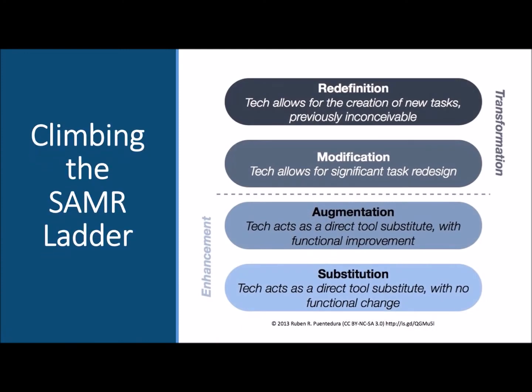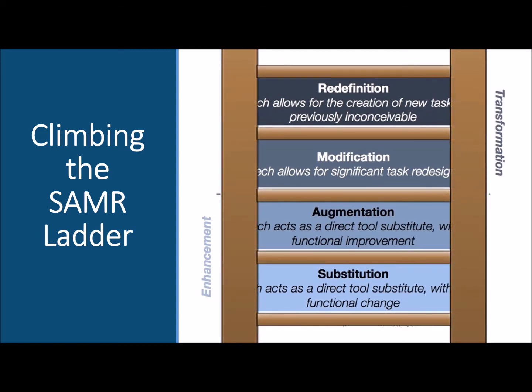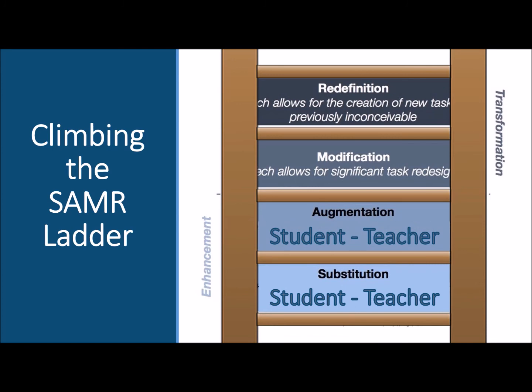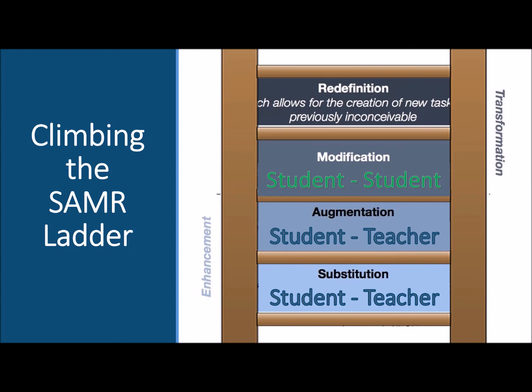Let's take another look at the SAMR model. Envision technology integration as climbing the steps of a ladder — a step-by-step process that builds upon itself. As we build technology integration, we also build levels of student engagement and interaction. The bottom rungs — substitution and augmentation — help enhance lessons, but engagement primarily occurs between student and teacher. When we begin to modify and transform lessons, we naturally build in collaboration and critical thinking, increasing interactions between students themselves.